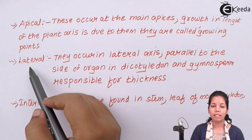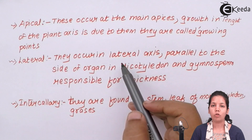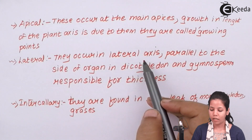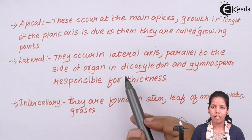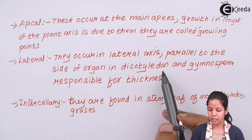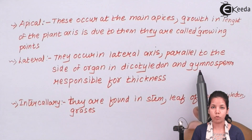The next kind of meristem is lateral meristem. They are present at the lateral axis — the horizontal regions of branches. They are also present at regions wherever fruits are located. The majority are found in dicots and some monocotyledons, and in some gymnosperms also they are found.